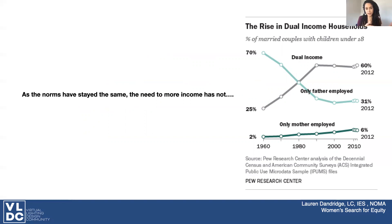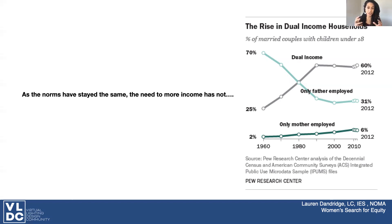As we see here in this slide, women have started increasing their incomes by going into the workplace. And now we see the proliferation of dual income households. What's not present here is the social and gender norms that are applied to women inside the home and how those have not changed as women have entered the workplace.